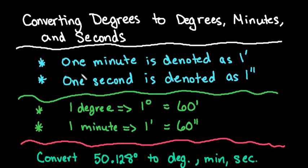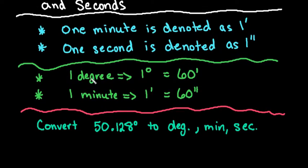So a couple things that you need to know. First off, one minute is denoted as one apostrophe, so whenever you see an apostrophe next to degrees that's talking about one minute. One second is denoted as one quotation mark or double apostrophe. A couple other things that you need to know is one degree is equal to 60 minutes and one minute is equal to 60 seconds.